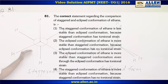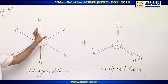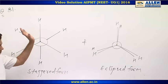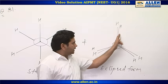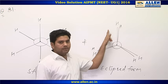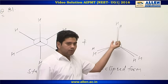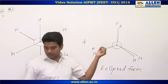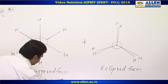In the staggered form of ethane, bond pair to bond pair distance is greater, so there is less torsional strain. But in the eclipsed form, bond pairs are at a closer distance, so there is more repulsion between bond pairs and therefore more torsional strain. So the answer is 4.